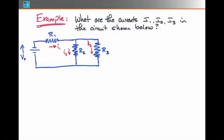Here's an example problem that will exemplify what we're talking about. We have a battery hooked up to a set of three resistors, two of which are in parallel, and we may ask, what are the currents I1, I2, and I3 shown in the circuit below?